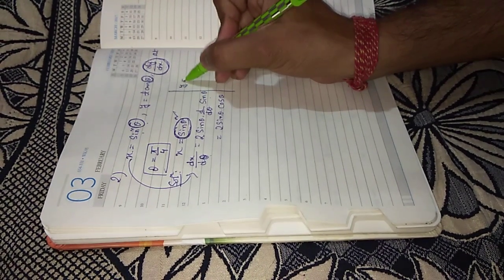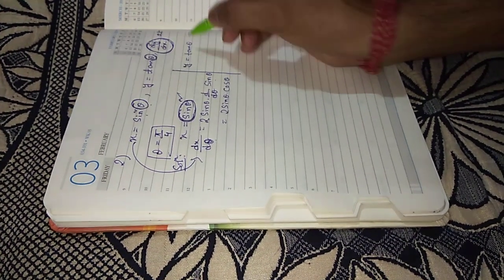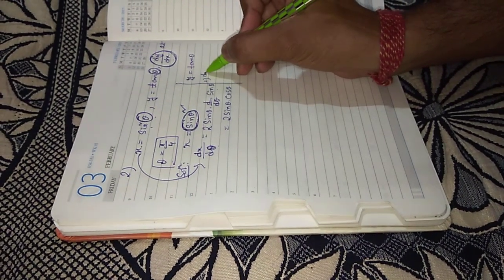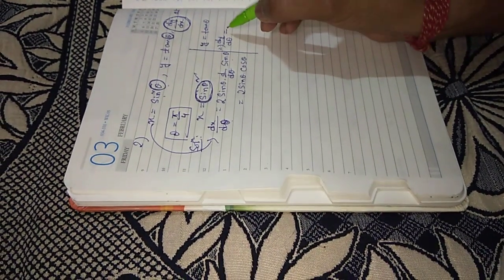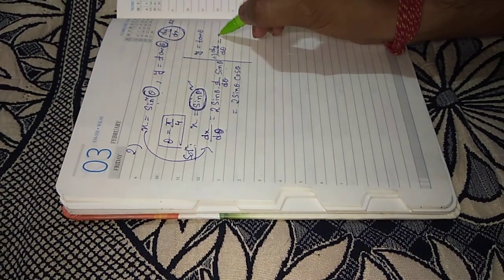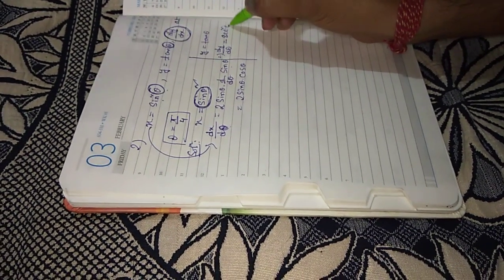Similarly, y is equal to tan theta. This is the second parametric function. Differentiate this function also with respect to theta. We all know differentiation of tan theta is sec square theta.